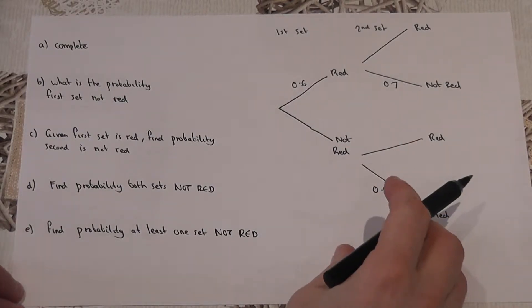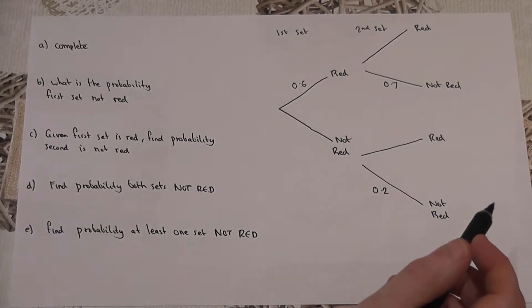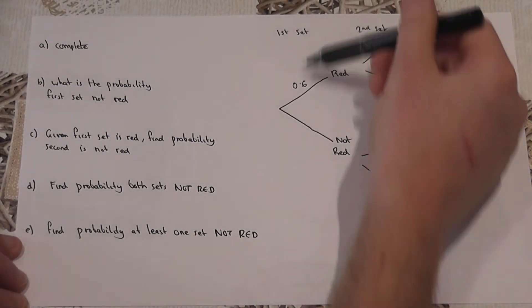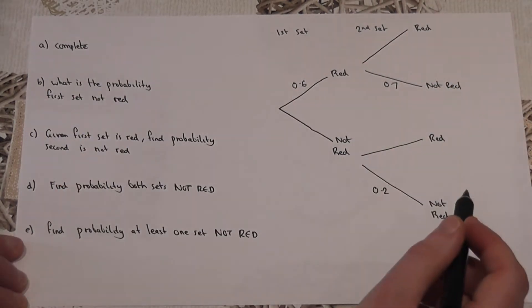In this video we review the probability tree diagram to solve a question involving probability. In this context, Rasheed is driving a car through a city through two sets of lights, set 1 and set 2, and we're asked to complete first of all the tree diagram.